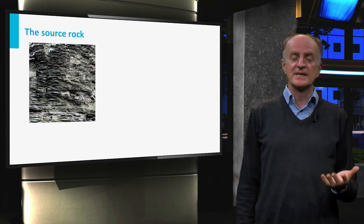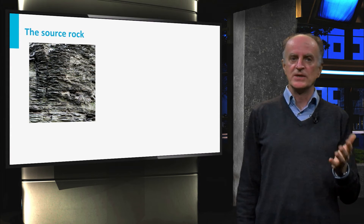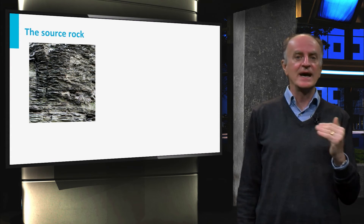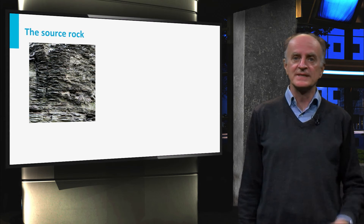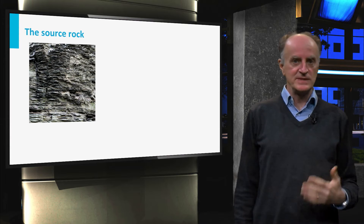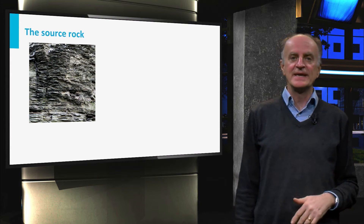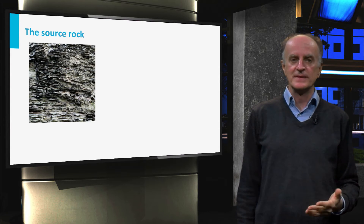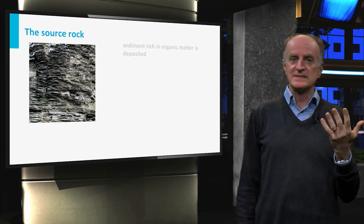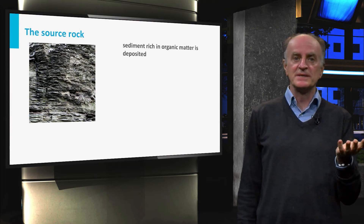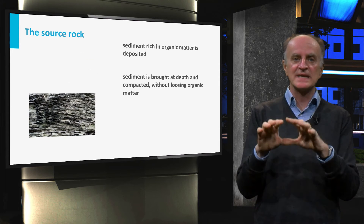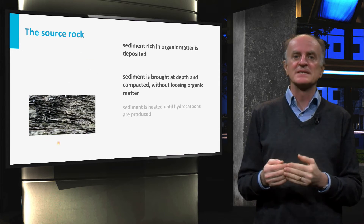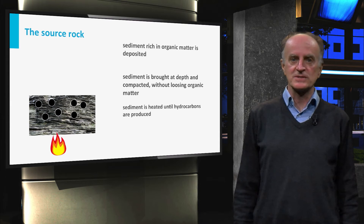Everything starts with a source rock. A good source rock has a high total organic content, usually more than 1%, and has been heated enough to generate petroleum. Three stages are then needed to obtain a high quality source rock: sediments rich in organic matter must be deposited, the organic matter must be preserved during subsidence, and the rock must be heated at high enough temperatures.